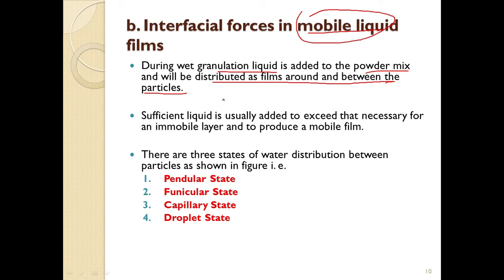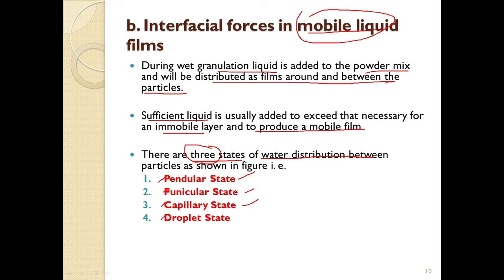The liquid usually added exceeds that necessary for the immobile layer and produces a mobile film. We add granulating fluid until it is sufficient to produce a wet mass. During this process there are three important stages of water distribution between particles: pendular state, funicular state, and capillary state. The droplet state is not required for granulation.